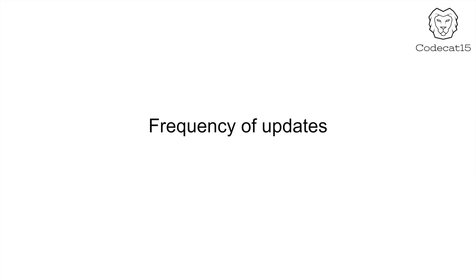The next point is frequency of updates. Make sure that whatever library you are using is actively maintained. It should not be that the library's latest release was in 2016 and right now it is 2020 — meaning no one has updated that library in 4 years. If you still have to use it, first test it in a sample project with all the functionalities you need. Make sure any library you use goes through a POC — proof of concept — as I have told you. Only then implement that library in your project.